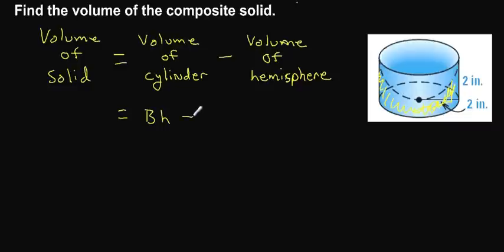And from that, we're going to subtract away the hemisphere. And so we're going to subtract away one half of four thirds pi r cubed.